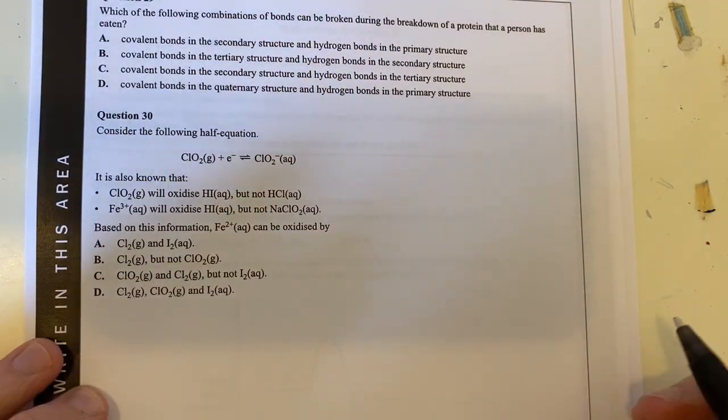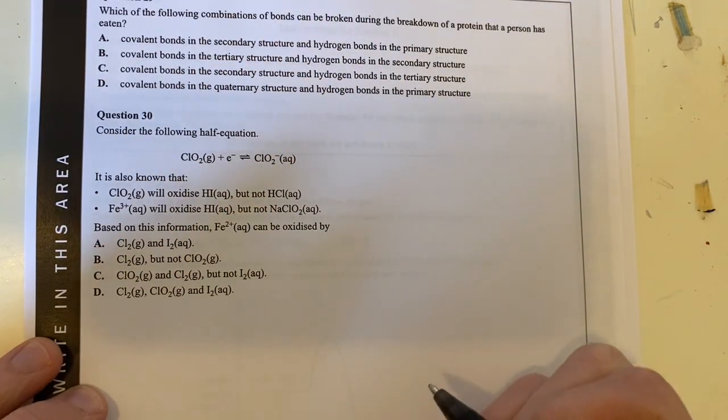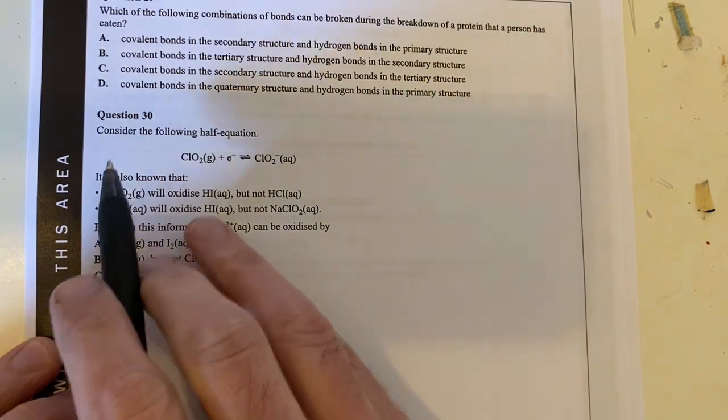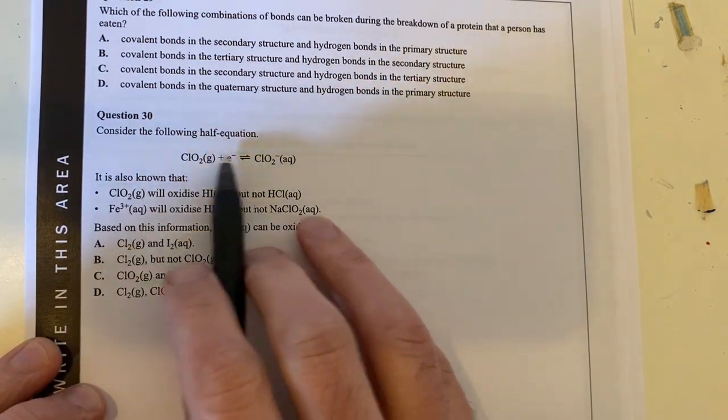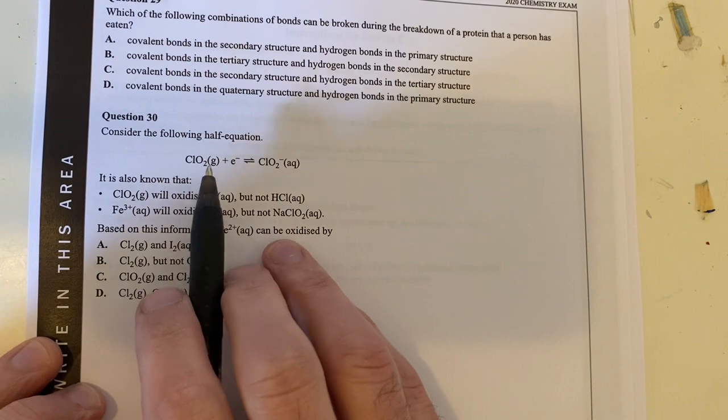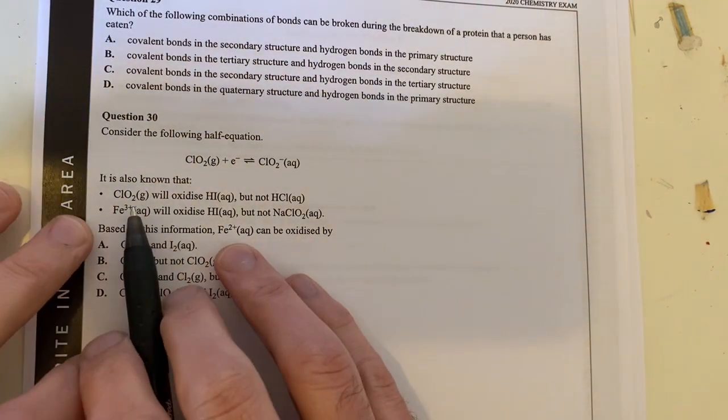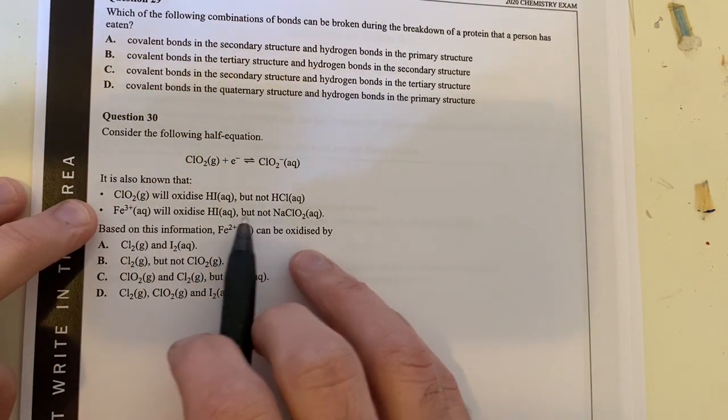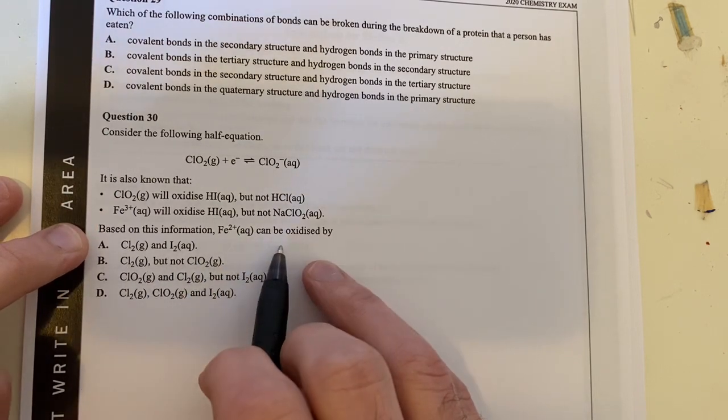Okay, so this is the final question on our 2020 VCAR exam, in the multiple choice section, and we have this half equation. We need to consider this half-equation, and it is known that we have understanding of oxidation reduction reactions and we need to predict what's going to happen.